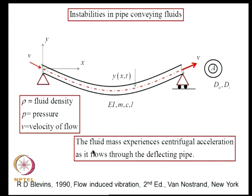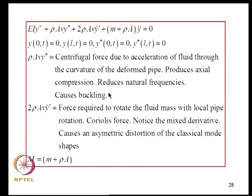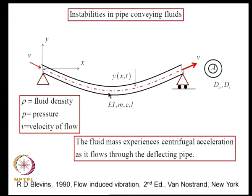The fluid mass experiences centrifugal acceleration as it flows through the deflecting pipe — this is an additional effect to handle beyond the stiffness and inertia of the pipe and mass of the flowing fluid. The book by Blevins on flow-induced vibration contains many examples of fluid-structure interaction problems, especially vibration of piping systems, and this illustration is drawn from details provided in that book.